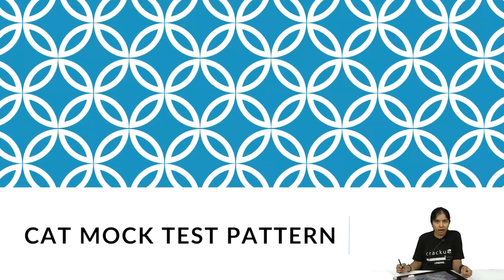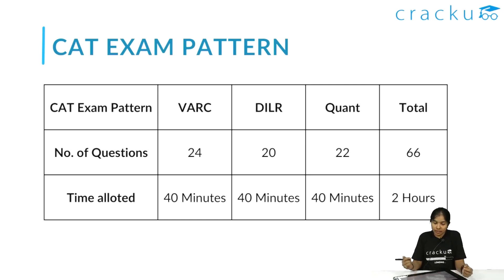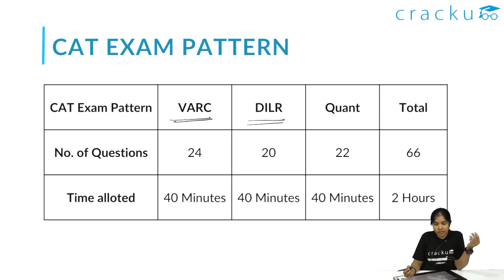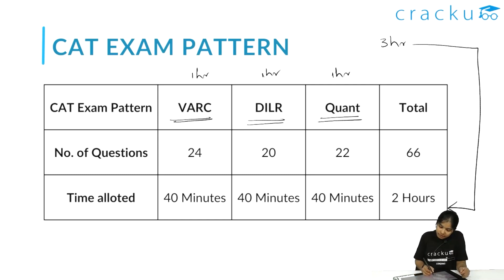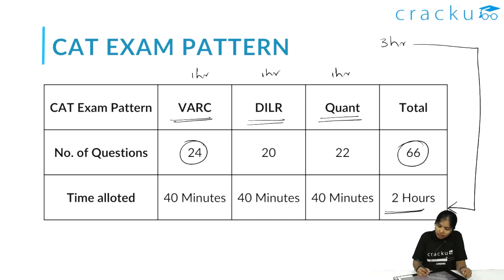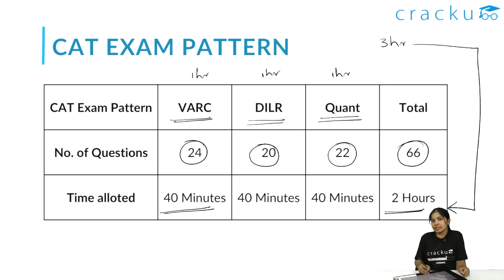Now let's talk about the CAT exam pattern. CAT comprises three sections: Verbal Ability and Reading Comprehension (VARC), Data Interpretation and Logical Reasoning (DILR), and Quantitative Aptitude. Previously before COVID, the exam was three hours with one hour per section, but due to COVID it was reduced to two hours. The total number of questions is 66. VARC has 24 questions, DILR has 20 questions, and Quant has 22 questions, with 40 minutes allocated for each section.